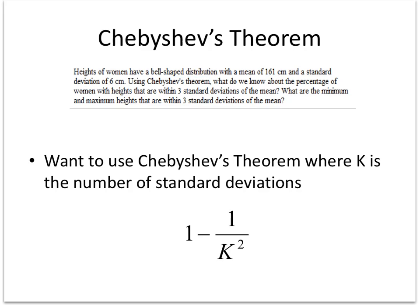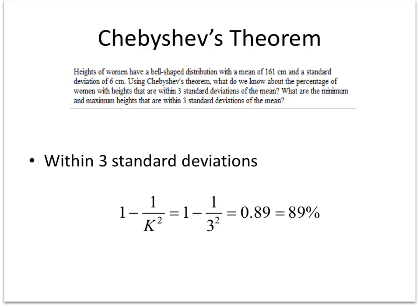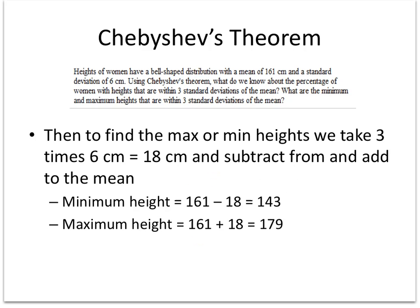Well, Chebyshev's theorem is 1 minus 1 over k squared, where k is the number of standard deviations. So within three standard deviations, if I just do this math here, I get 89%.